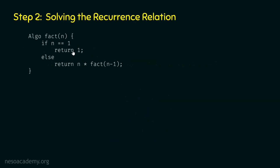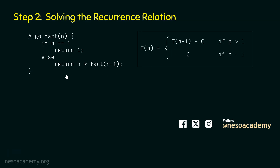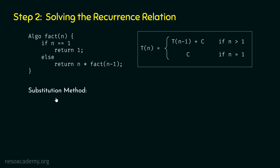This is the recursive algorithm to calculate factorial of n. The recurrence relation of this algorithm is: T(n) = T(n−1) + c if n is greater than 1, and T(n) = c if n is equal to 1. Our job is to solve this recurrence relation using the substitution method. According to this method, we need to start from the recursive case: T(n) = T(n−1) + c.